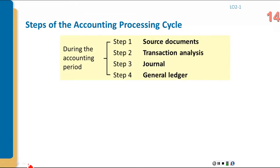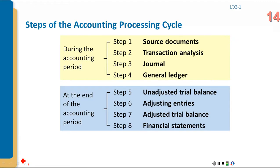There are typically ten steps in the accounting processing cycle. Throughout the accounting period, source documents come in — things like invoices, bills, and checking statements — triggering transactions. You analyze which accounts are impacted and how. Then you record the transaction in the journal — journalizing it — organized chronologically by date. Separately, the general ledger is organized by account. This occurs daily and weekly throughout the accounting period.